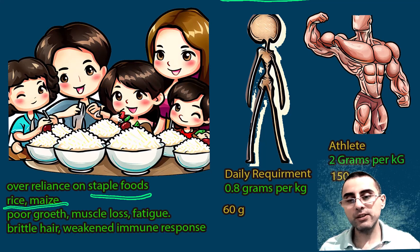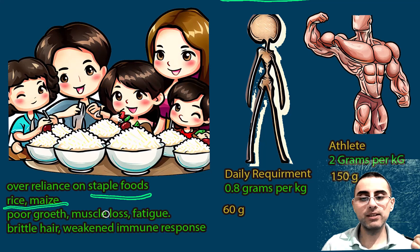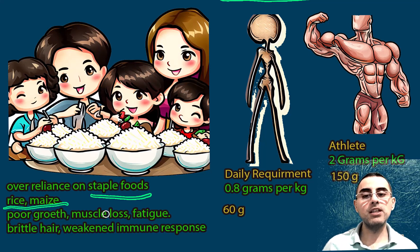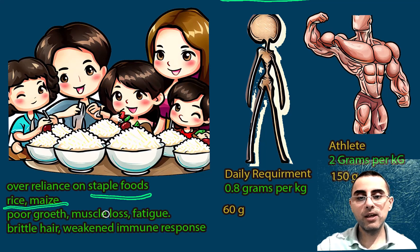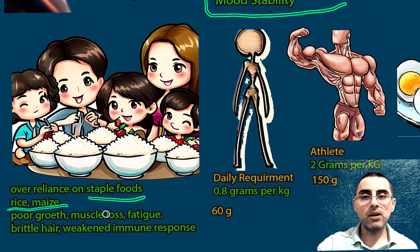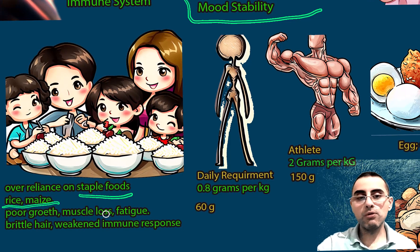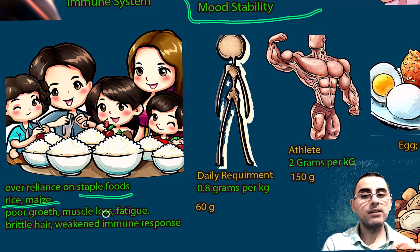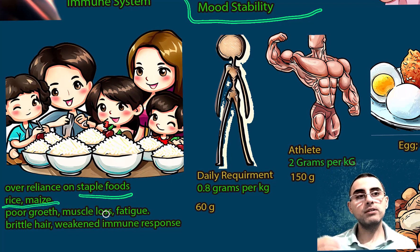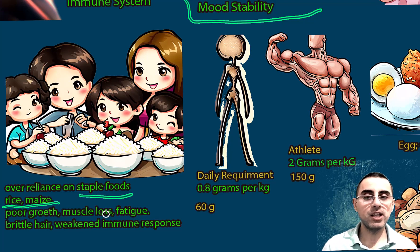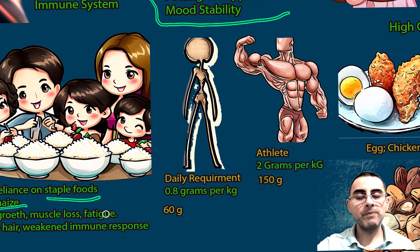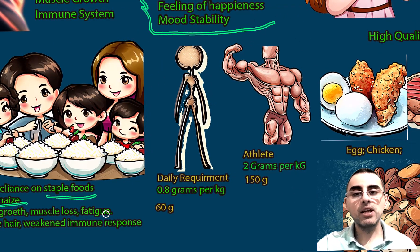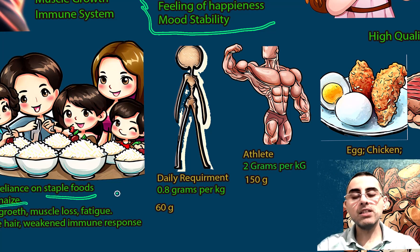Such people experience poor growth in children, muscle loss, fatigue, brittle hair, and a weakened immune system. This is not limited to low socioeconomic groups — people in modern diets who eat mainly one type of food that lacks essential amino acids can also experience this deficiency.